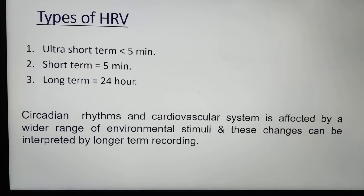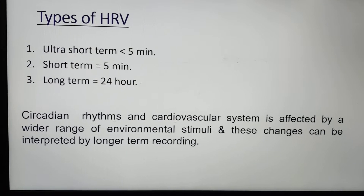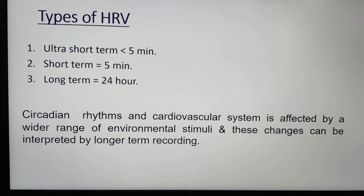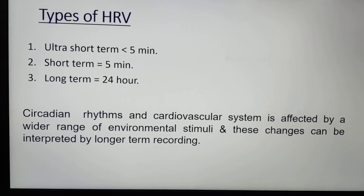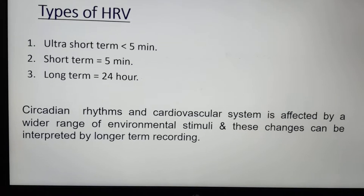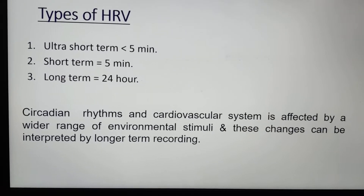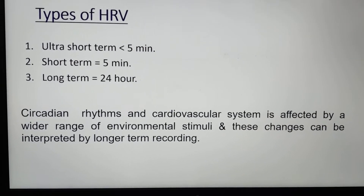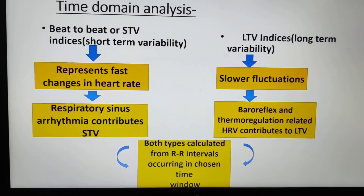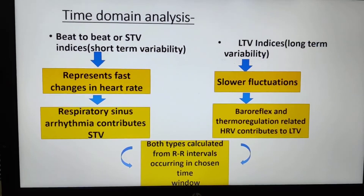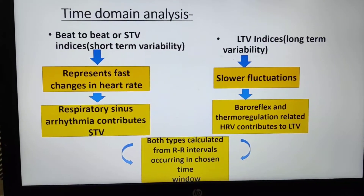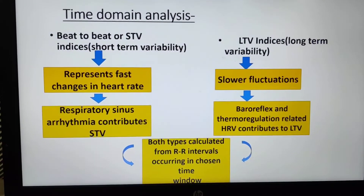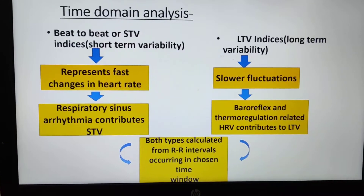The second type is short term, which is 5 minutes, and then long term, which is 24 hours. In time domain analysis there are beat-to-beat or short term variability indices and long term variability indices.